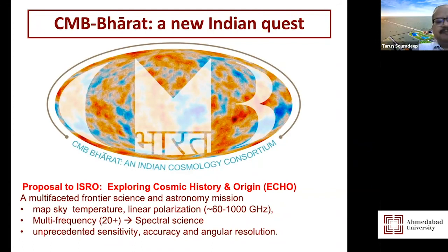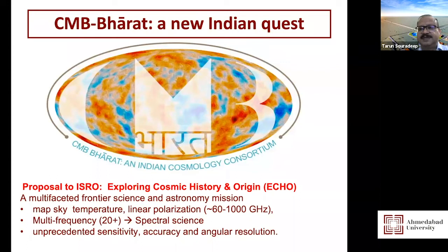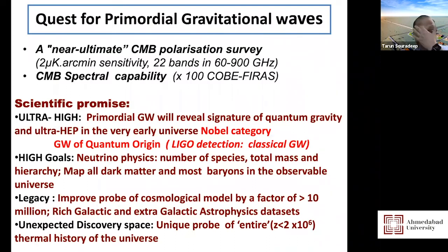To achieve that amazing quest, underway all around the globe, in India the cosmological consortium proposed to the Indian Space Research Organisation (ISRO) a satellite dubbed ECHO — Exploring Cosmic History and Origin — which will be the best possible CMB satellite imaginable. It would map the sky in many wavelengths (required to clean out other emissions) and will have unprecedented sensitivity, accuracy, and angular resolution.